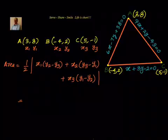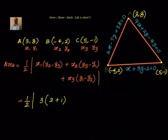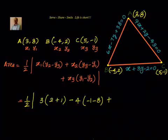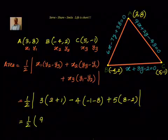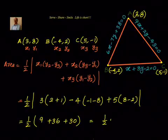Now let us substitute the values. Area equals half into 3 into (2 minus minus 1) plus minus 4 into (minus 1 minus 8) plus 5 into (8 minus 2). This simplifies to half into 3 into 3 plus minus 4 into minus 9 plus 5 into 6, which is half into 9 plus 36 plus 30, equalling half into 75, giving 37.5 square units.